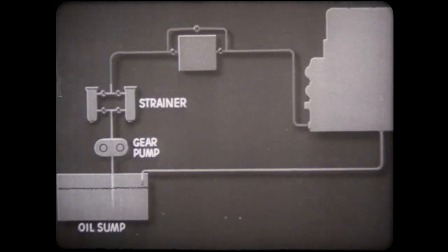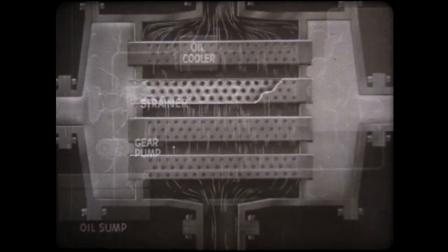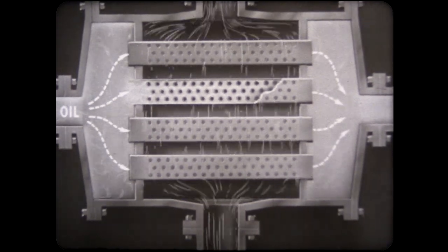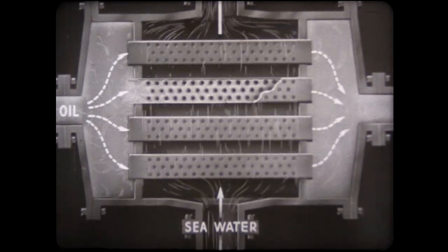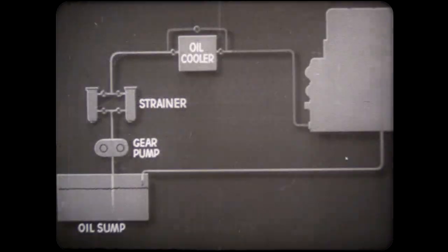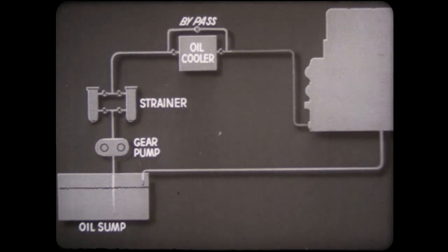The oil next passes through a heat exchanger or cooler, where it is cooled by seawater. Usually the oil flows through a set of tubes around which the seawater circulates. The rate of flow can be regulated to control the rate of cooling. The heat exchanger may be bypassed in cold weather when the oil does not require cooling.